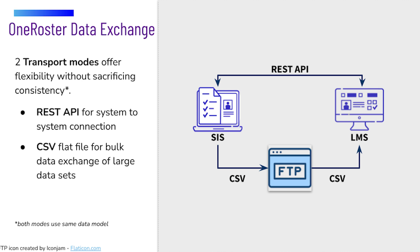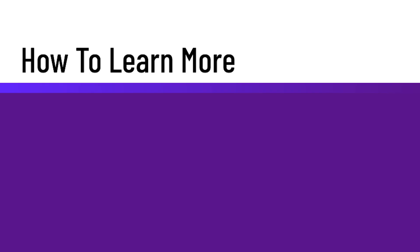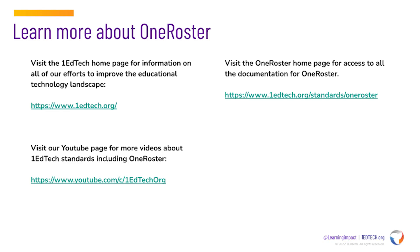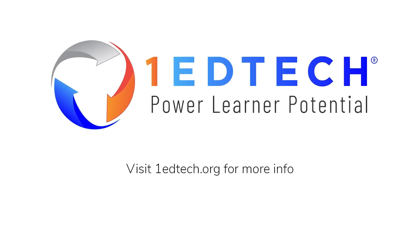So if you want to learn more, where do you go? You can go to the OneEdTech homepage at www.oneedtech.org. You can go to the OneRoster homepage for access to the specification, technical documentation, RFP language and guidance, or other documentation at oneedtech.org/standards/OneRoster. Or you can find more videos about OneRoster or other OneEdTech standards — both short introductory videos and longer-form technical deep dives — at www.youtube.com/c/OneEdTech. Thank you very much for listening to this introduction to OneRoster.